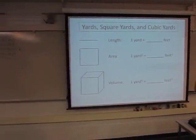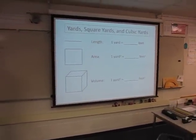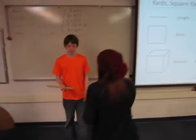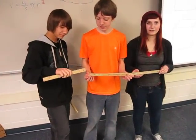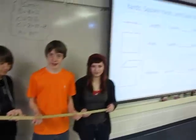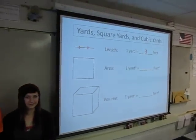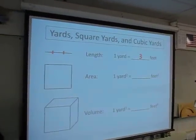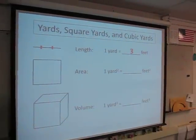And hopefully everybody knows at this point that one yard is going to be equal to three feet. So one yard is three feet long. So if I take a yard and split it into three equal sections, I'll have three feet making up that one yard.